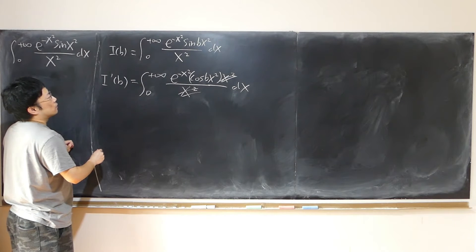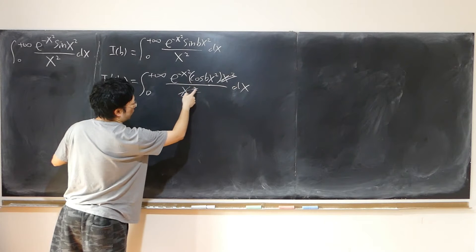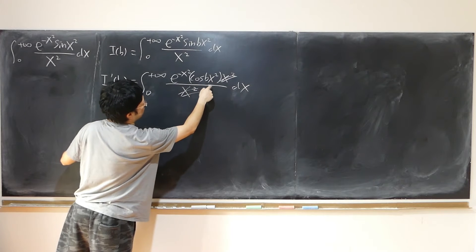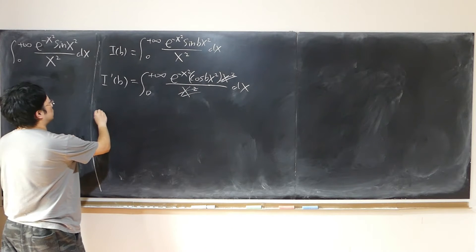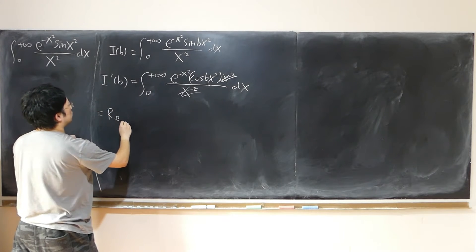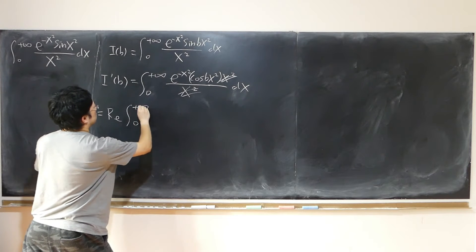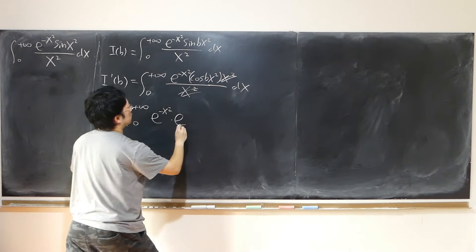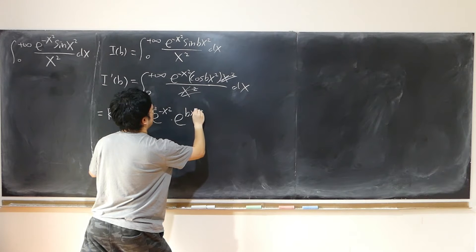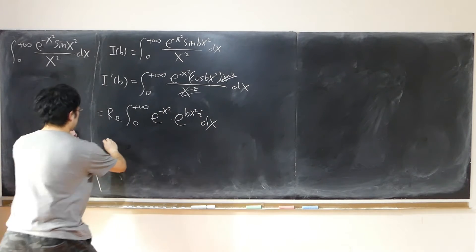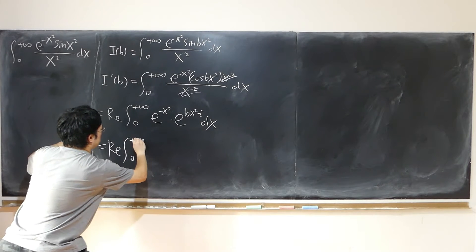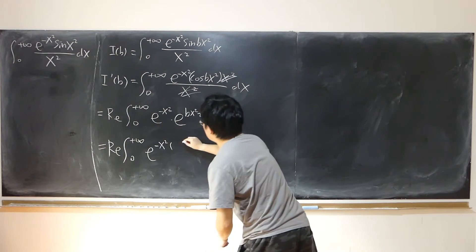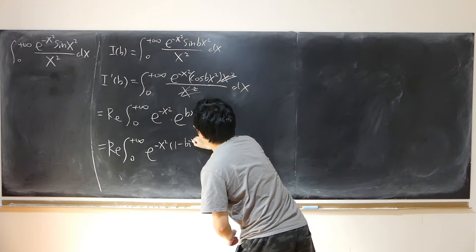It's also perfectly legal to differentiate inside the integral first. So here I'm going to rewrite cosine(bx²) — this is in fact the real part of the complex number e^(ibx²), whose imaginary part is i times sine(bx²). So I'(b) equals the real part of the integral from 0 to positive infinity of e to the negative x squared times e to the bx squared·i dx, which combines as e to the negative x squared times (1 minus bi).